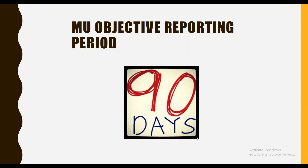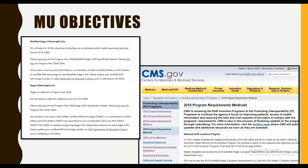In program year 2018, all providers may use a 90-day MU objective reporting period. And just as a reminder, if you're attesting to Modified Stage 2, you'll be providing data for 10 objectives, and if you're attesting to Stage 3, you'll be reporting on 8 objectives. If you need to find the CMS specification sheets for the MU objectives, they can be found on our website or on CMS's website. I'll be providing a link to both of these resources below this video.